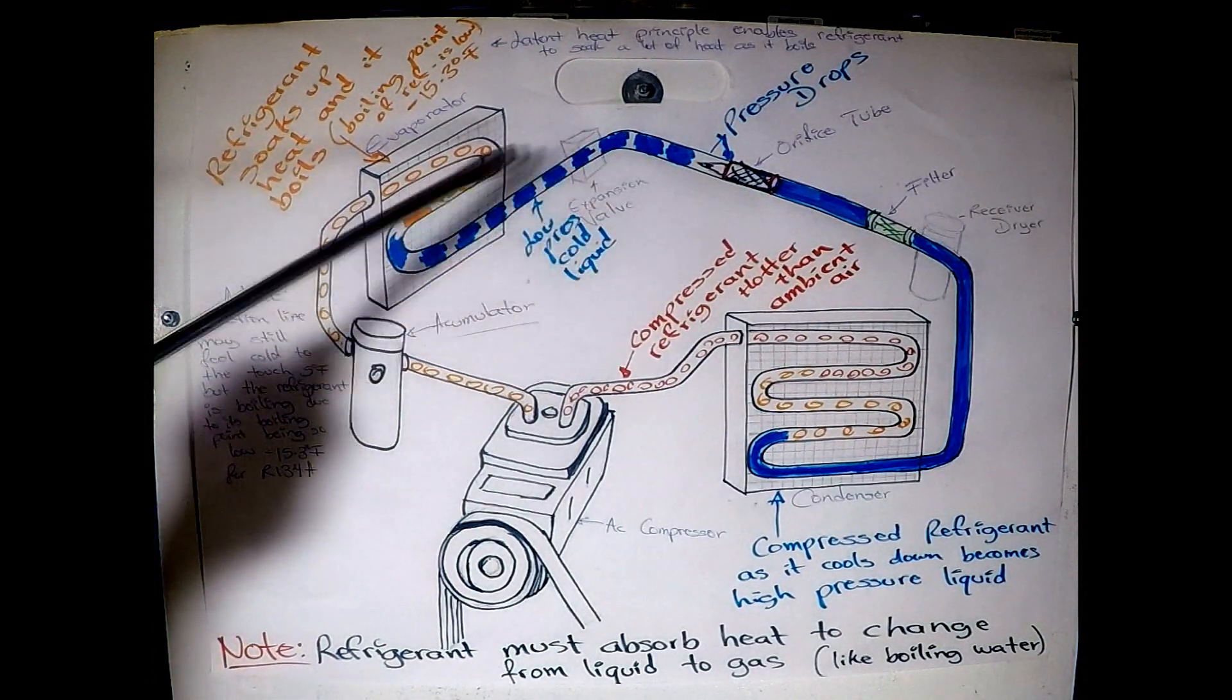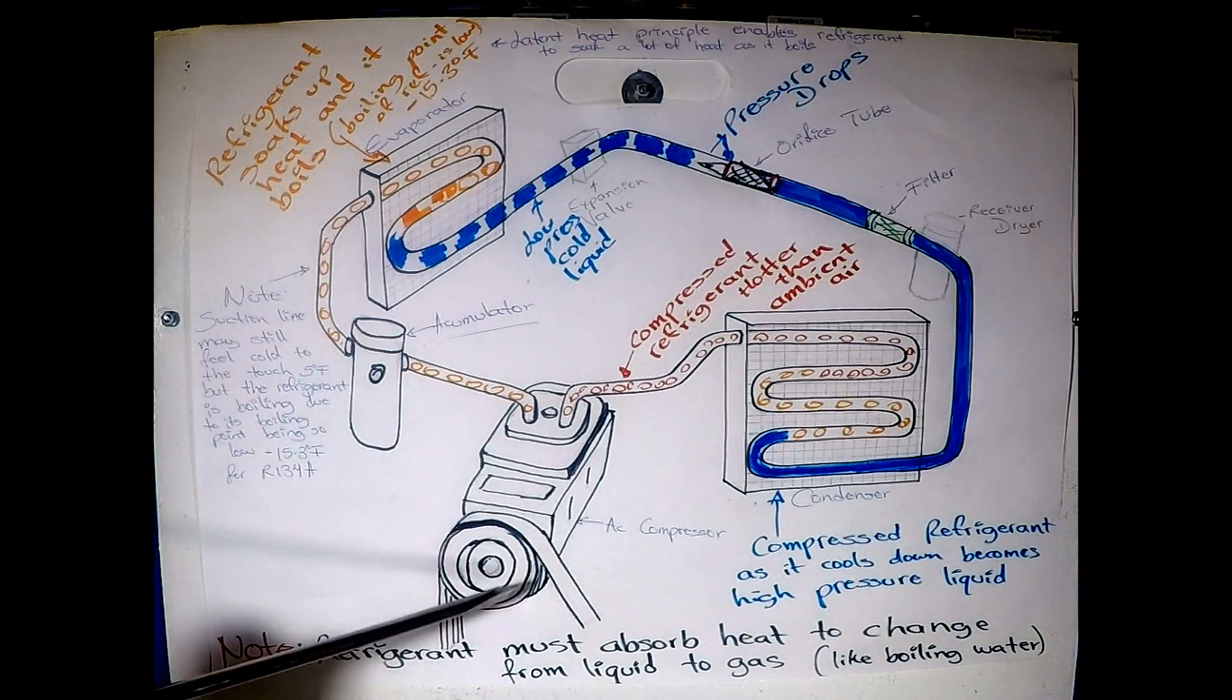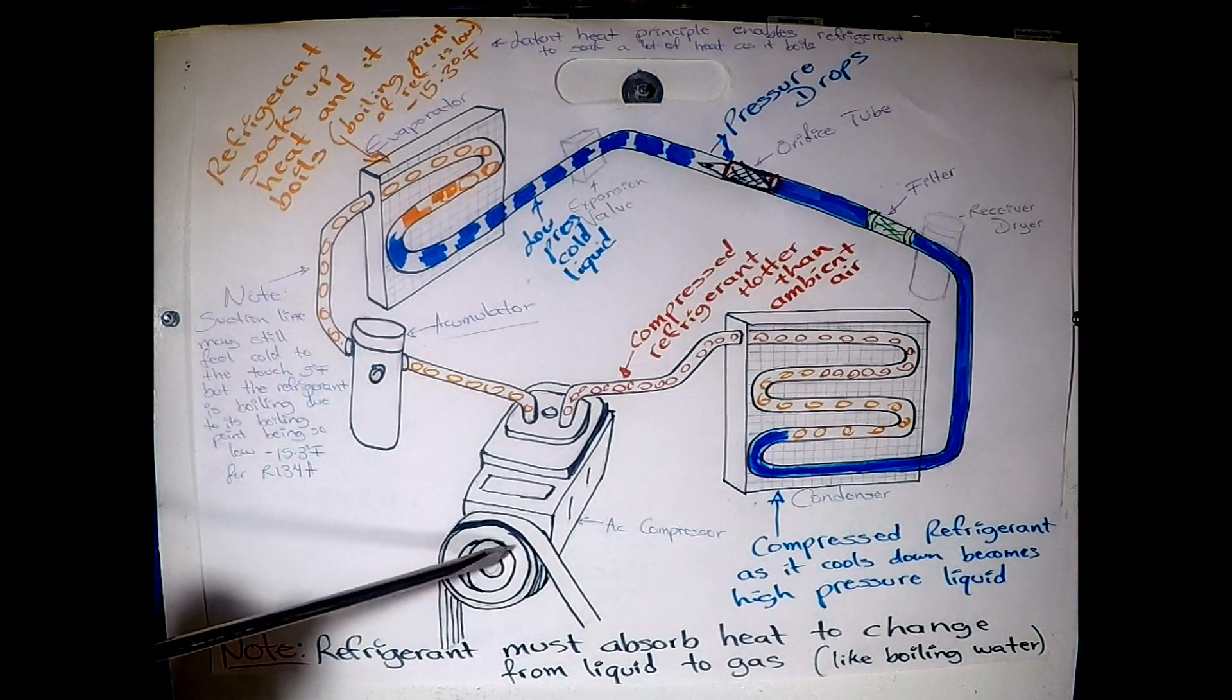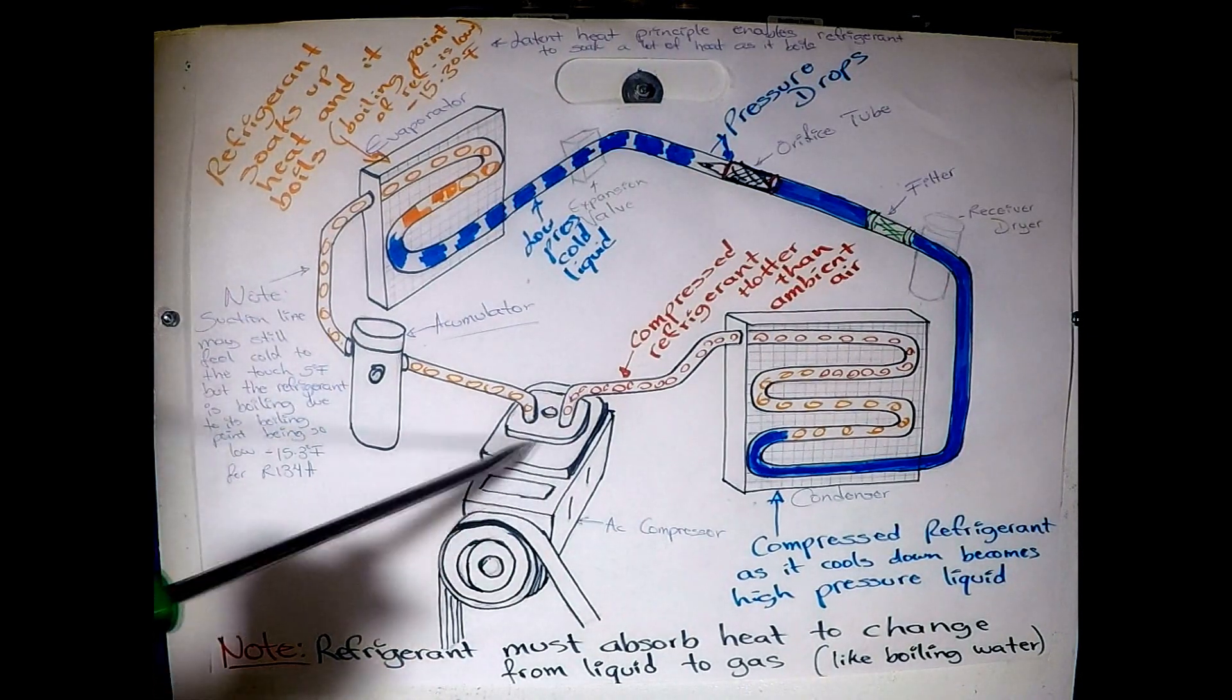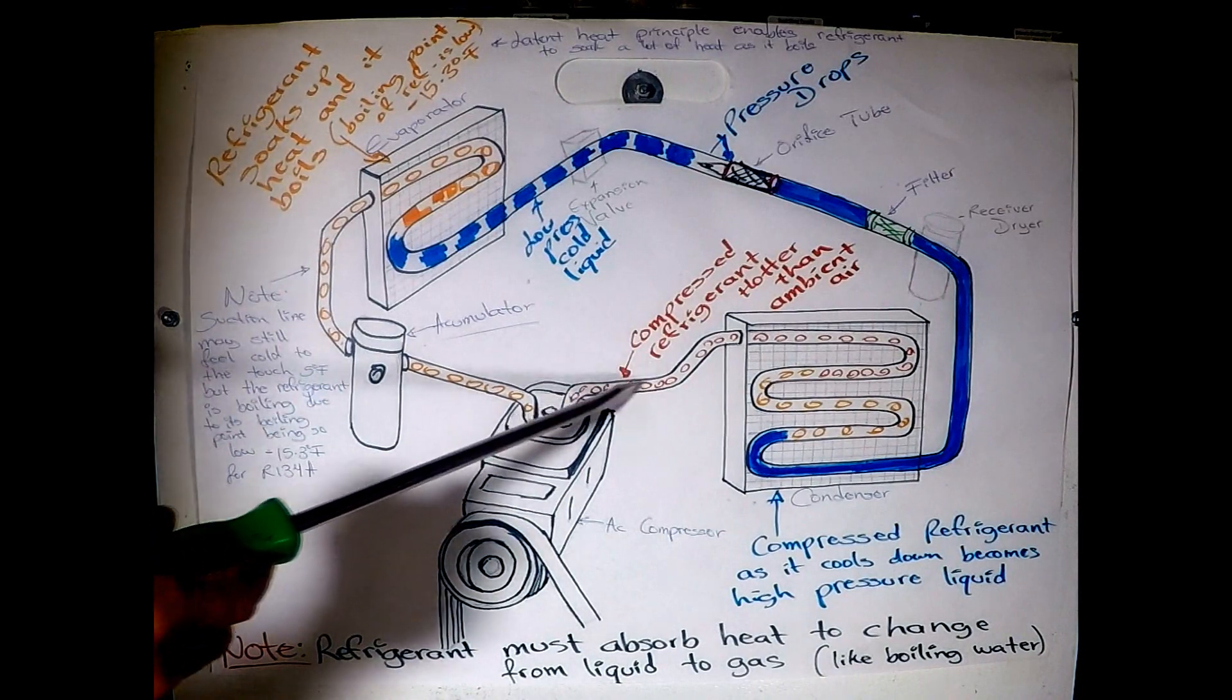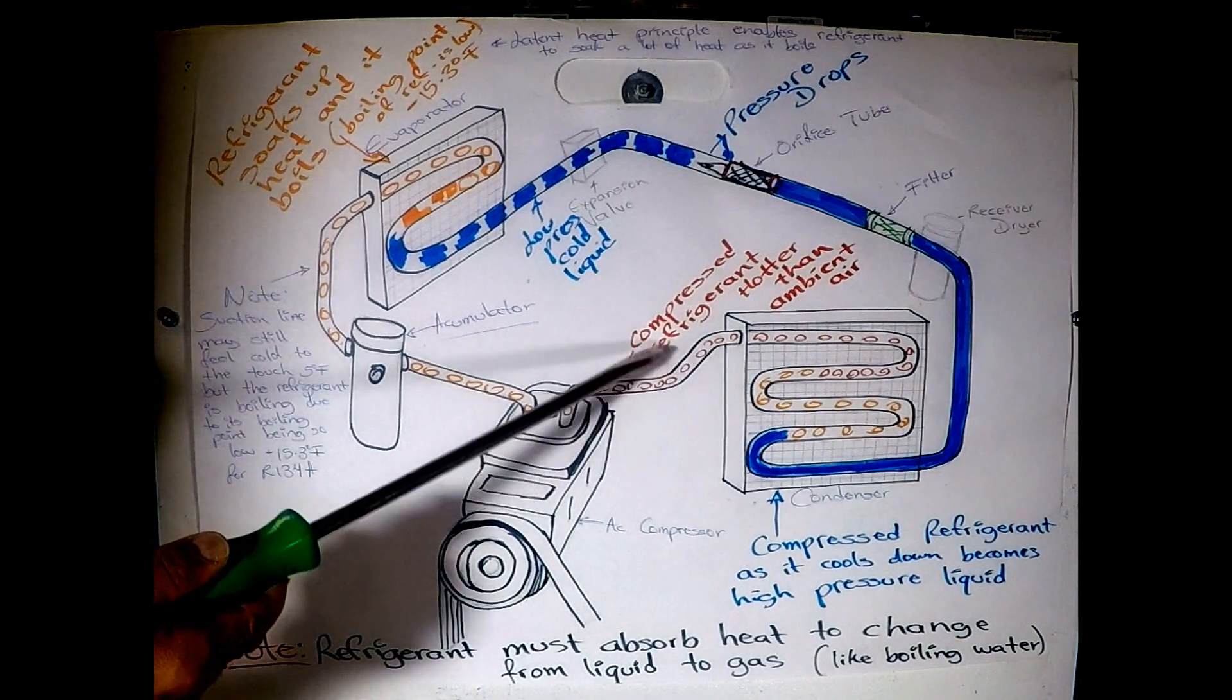So now that we know the components, let's go over the operation. The AC compressor is driven by the serpentine belt, or a V-belt if your vehicle is older. And here there is an AC clutch that is engaged every time you turn the air conditioning on inside your car. As the pistons start moving inside the compressor, the flow begins, and the refrigerant gets compressed, and as it gets compressed, it becomes really hot, hotter than the ambient temperature.